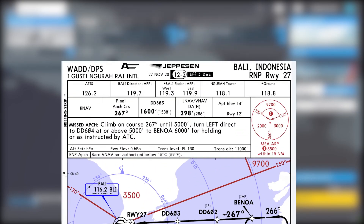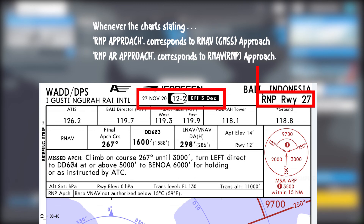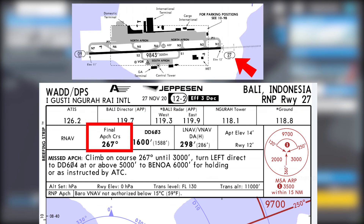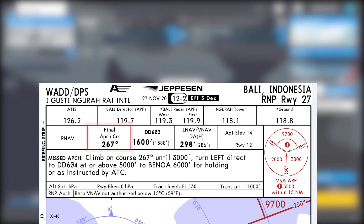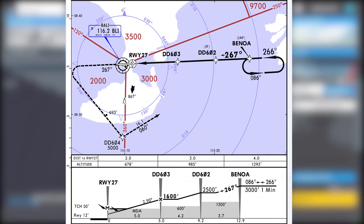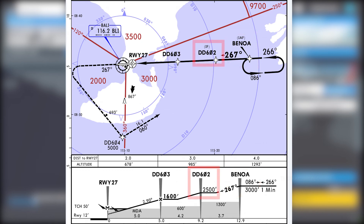We have the Bali RNP runway 27 chart, number 12-2, dated 27 November 2020. The final approach course is 267 degrees, which is the same as the runway 27 track. Your final approach fix is Delta Delta 603, expected to cross at 1600 feet. The LNAV/VNAV decision altitude minima is 298 feet, airport elevation 14 feet, and runway elevation 12 feet.